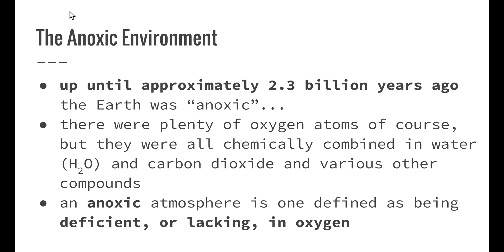Up until about 2.3 billion years ago the earth was considered to be anoxic. There was plenty of oxygen atoms available, but they were all chemically combined in water in the form of H2O and carbon dioxide and a couple of other compounds — not in the usable form of oxygen we know today. The definition of an anoxic atmosphere is one that is deficient or lacking in free oxygen.